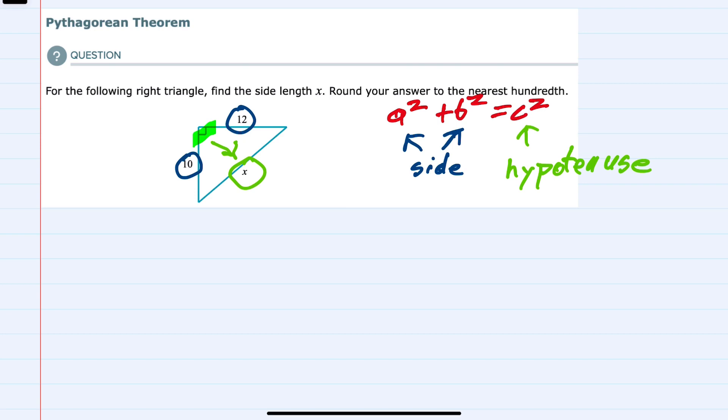So if I substitute into our Pythagorean Theorem, our a's and b's are 10 and 12. So I'll say 10 squared plus 12 squared equals c squared. c being the hypotenuse here means that's x squared.